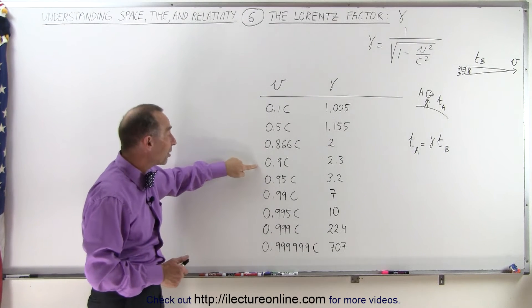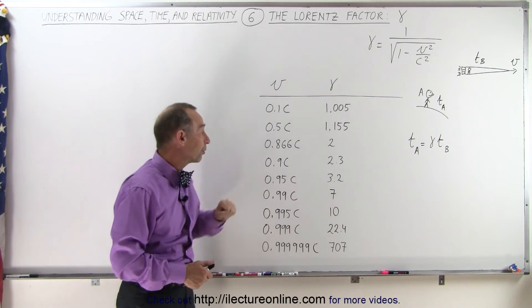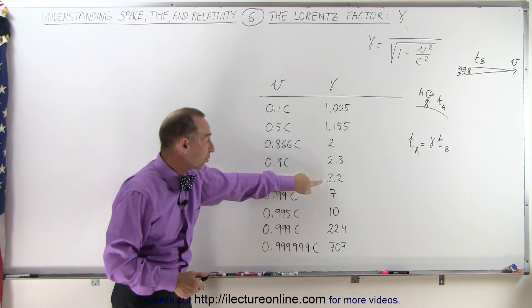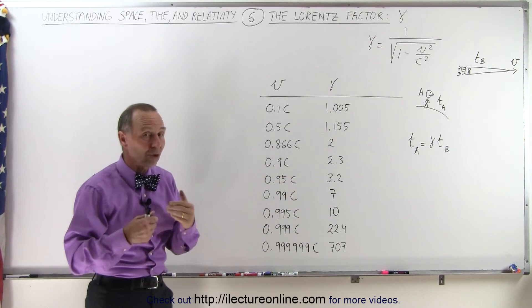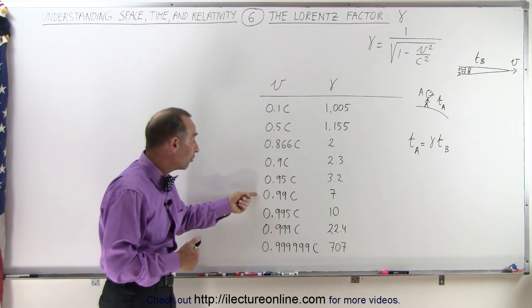By the time you reach 90% of the speed of light, the factor is 2.3. At 95% of the speed of light, the factor is 3.2. And by the time you start reaching a speed very close to the speed of light,